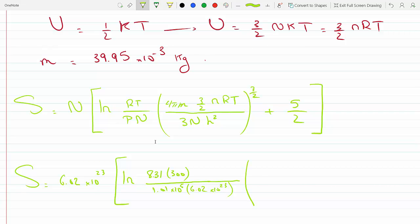And now we'll fill in here: 4 pi, 39.95 times 10 to the minus 3, times 3 halves. N is 1 mole, small n, times 8.31 times 300, all raised to 3 times 6.02 times 10 to the 23.